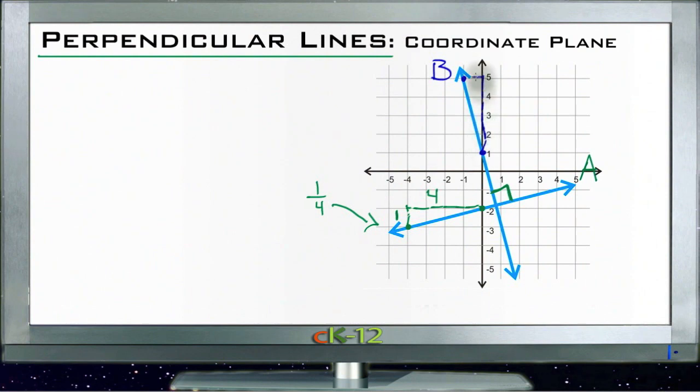So this one has a slope of four over negative one or negative four. Now you can see that the slopes negative four and then one quarter are similar except that they are inverted, one's flipped over.